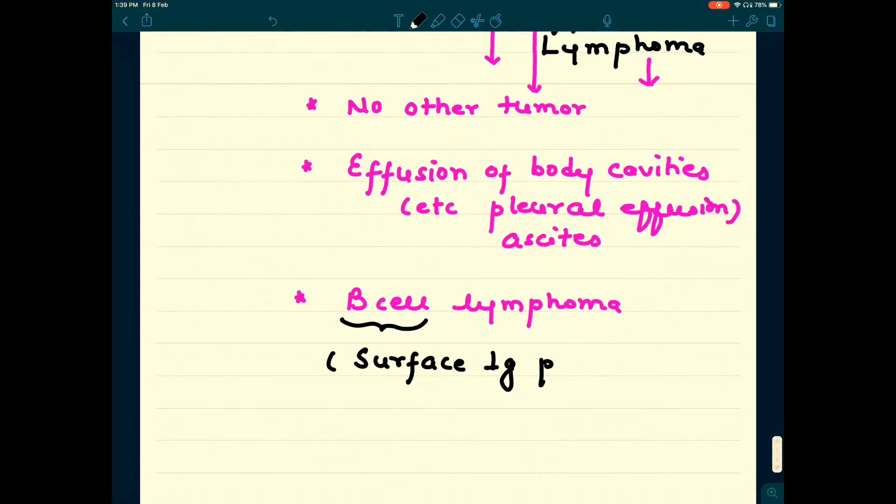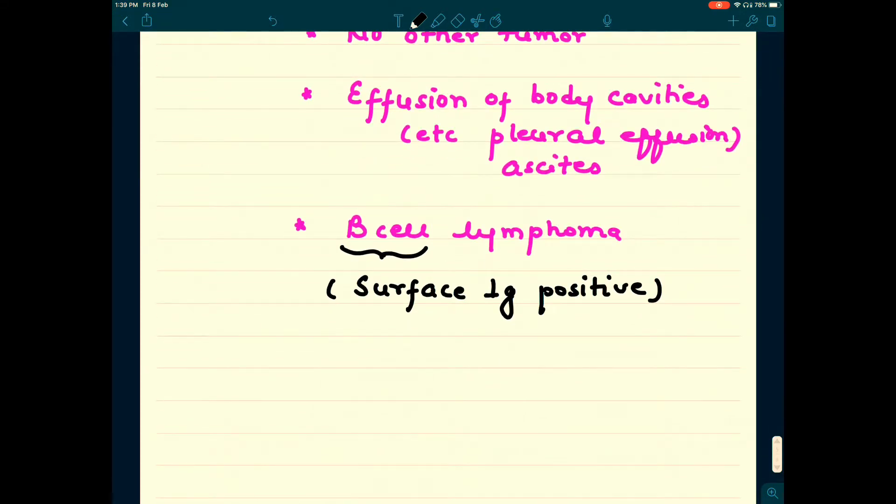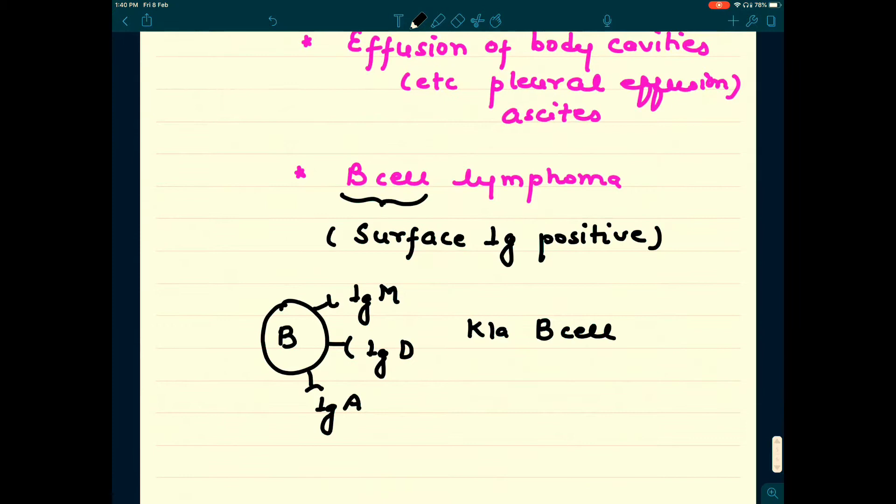Surface immunoglobulins are used for the identification of B cells. We have effusion with malignant cells that are positive for surface IgG, which is a marker of B cells. B cells have three different types of receptor: immunoglobulin M, immunoglobulin D, and immunoglobulin A. Any of these can be positive in case of primary effusion lymphoma. These receptors are known as B cell receptors or BCR.